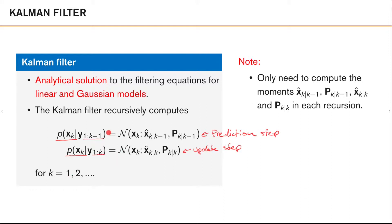Here we see one of the strengths of the linear and Gaussian models. As all densities are Gaussian, and a Gaussian distribution is defined by its mean and its covariance, we only need to compute these two moments in each step. We need to compute the mean and covariance of the predicted density in the prediction step, and the mean and covariance of the posterior density in the update step. That's all we need to do.